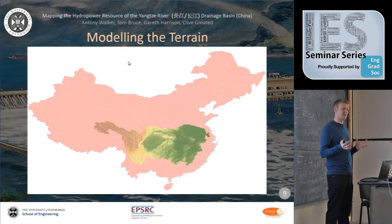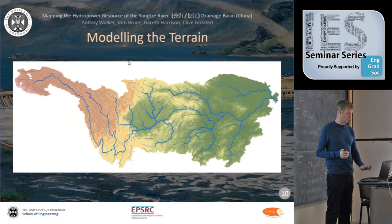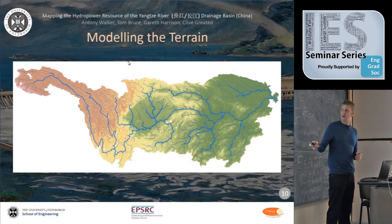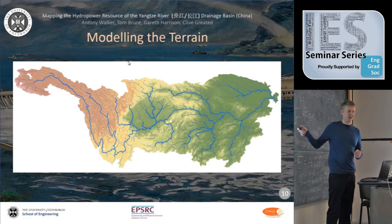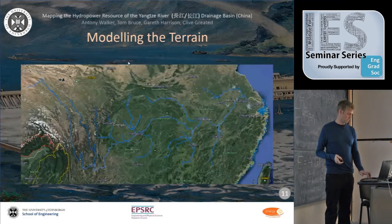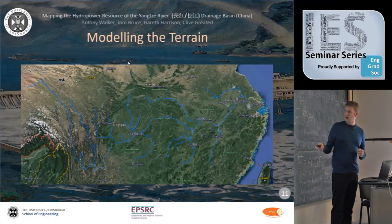Now we have the drainage basin, we can use it almost like a biscuit cutter to extract other datasets from it. This zoomed-in view shows the drainage basin with the river network overlaid — just the large rivers. The Yangtze itself starts up on the plateau, comes down through Yunnan, Sichuan, then through Chongqing, Wuhan, past the Three Gorges, and eventually out near Shanghai to the East China Sea. There are also many smaller rivers, very attractive for small hydropower.